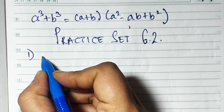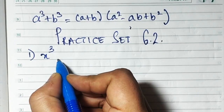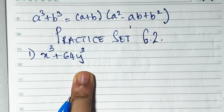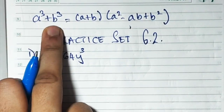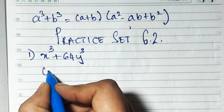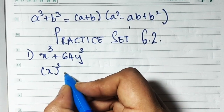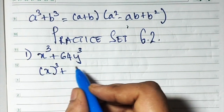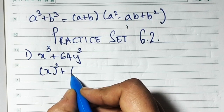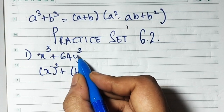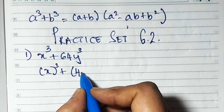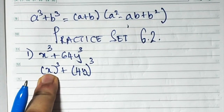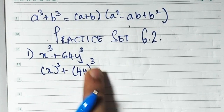First sum says x cube plus 64y cube. We have to convert it into the a cube plus b cube format. x cube will remain x cube, but 64 is actually the cube of 4 — because 4 times 4 is 16, and 16 times 4 is 64. So we write it as 4y cube. So this is going to be x cube plus 4y, whole cube. This format is done.